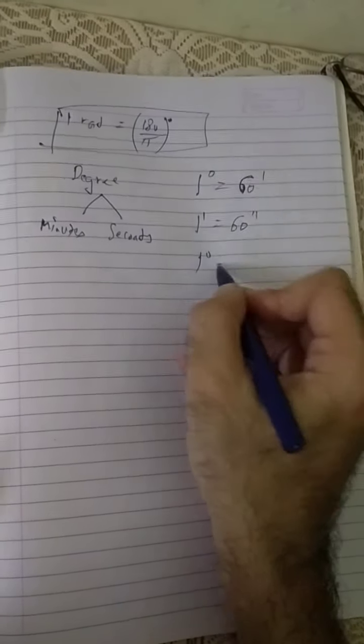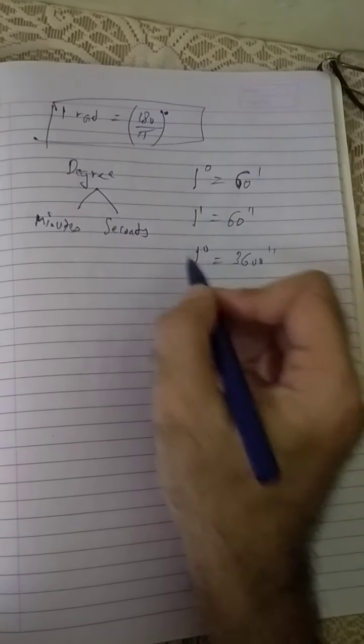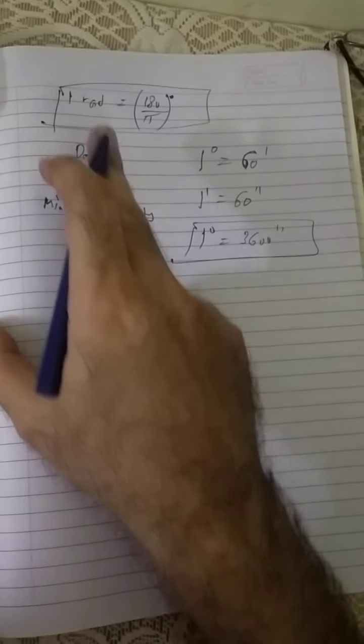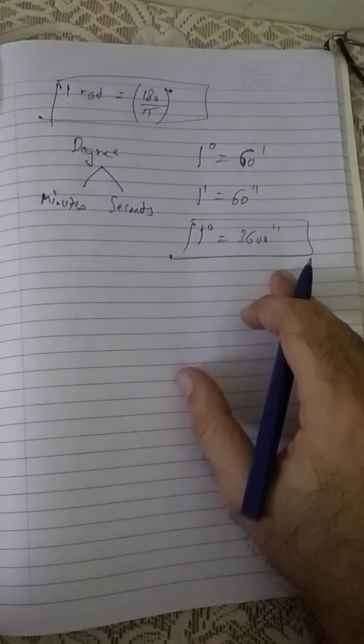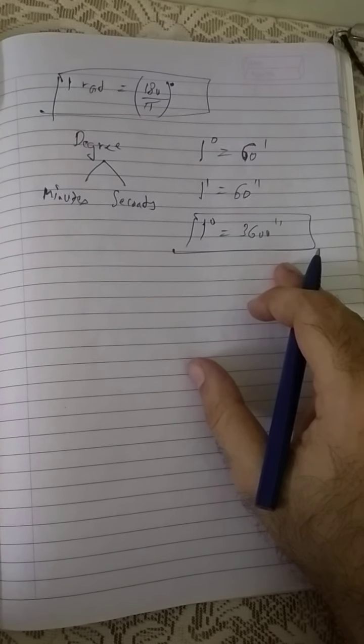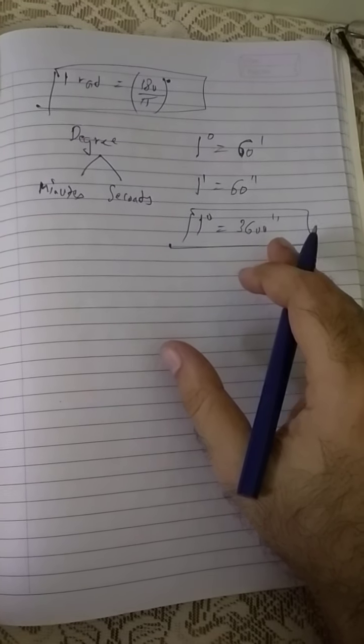So obviously we have 1 degree equals 3600 seconds. So this is how you can convert the whole expression of degree into minutes and seconds also. Suppose radian, so obviously you can convert it into minutes and seconds.